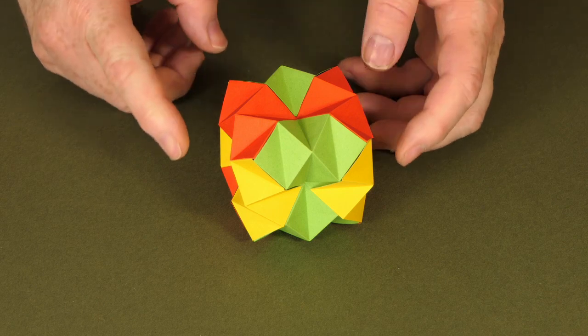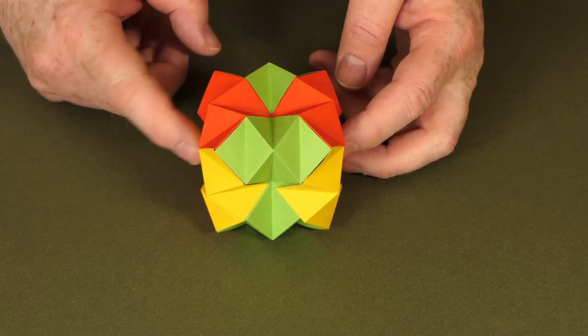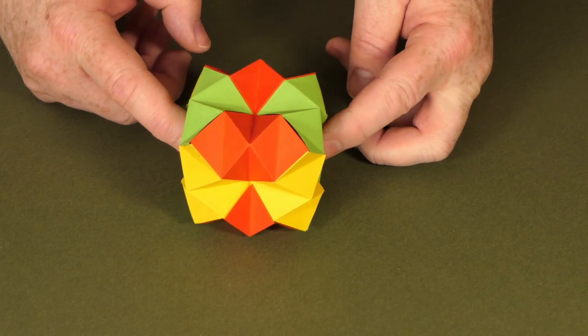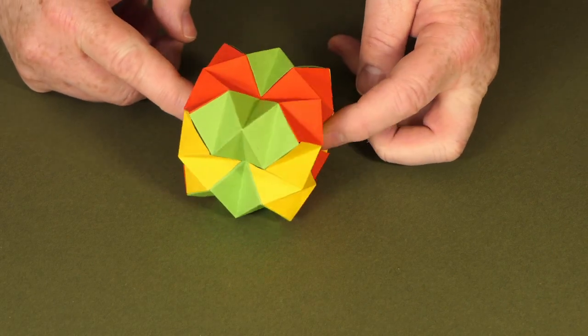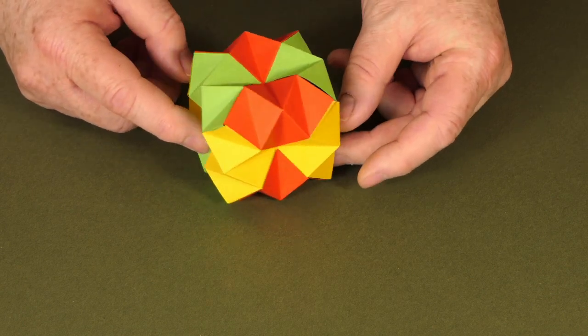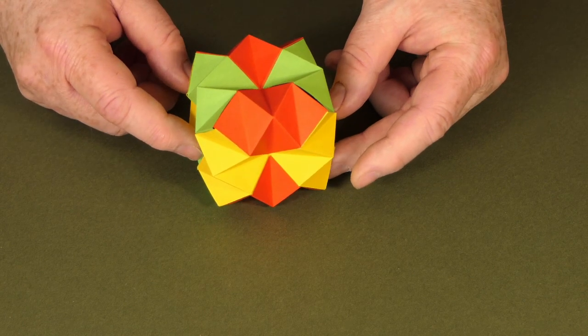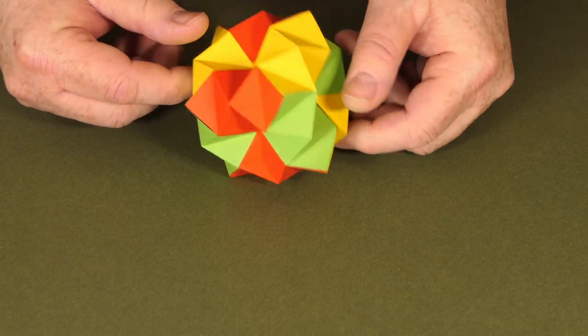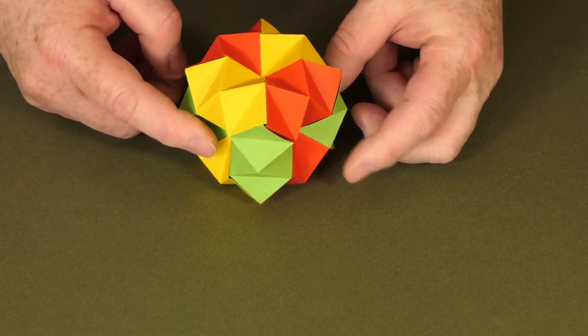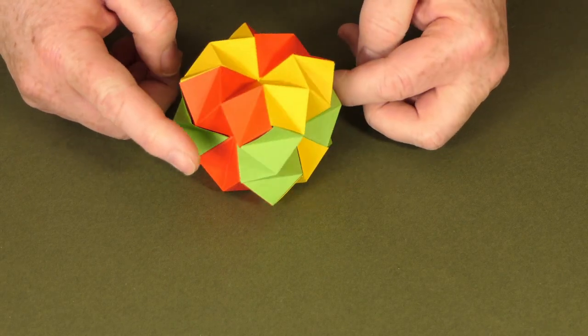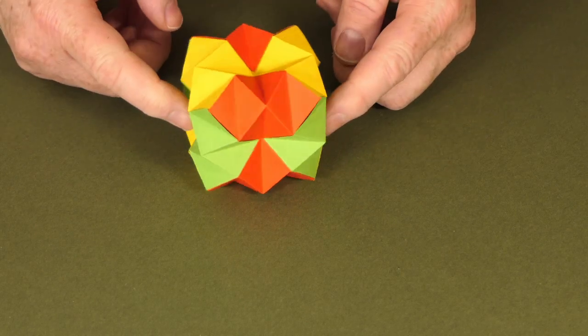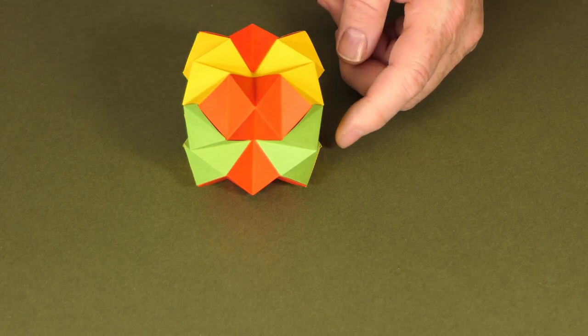In this video I'm going to show you a new model of mine I've called Simply Awkward. The reason for the name is that I can't think of a good name for the geometric shape of this - it's some kind of sunken dimpled cube octahedron sort of shape. The units themselves are very simple to fold but it is slightly awkward to assemble, so I've called it Simply Awkward for that reason.